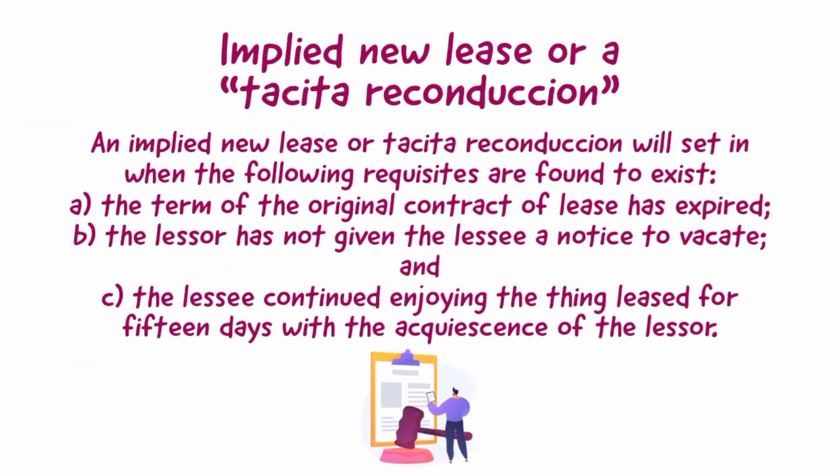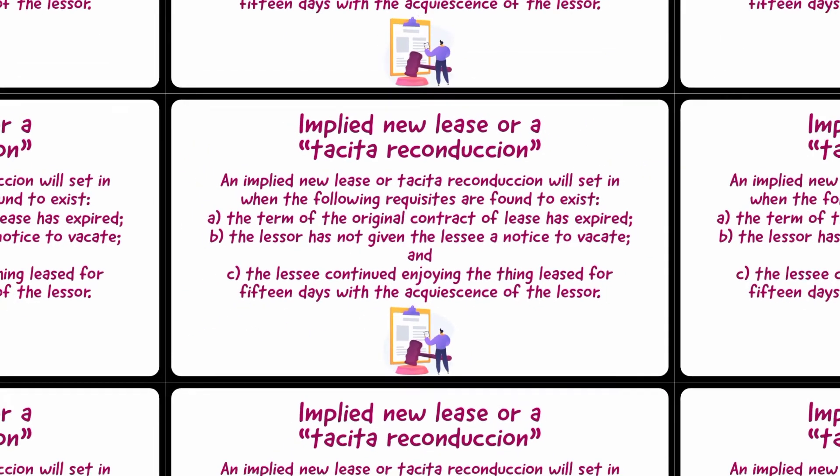An implied new lease, or tacita reconducción, will set in when the following requisites are found to exist. First, the term of the original contract of lease has expired. Second, the lessor has not given the lessee a notice to vacate. And third, the lessee continued enjoying the thing leased for fifteen days with the acquiescence of the lessor.